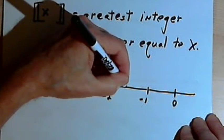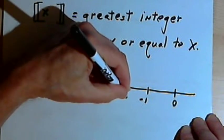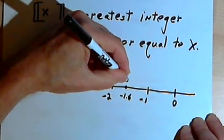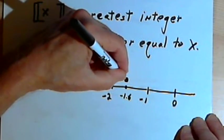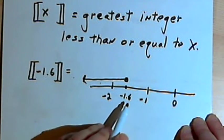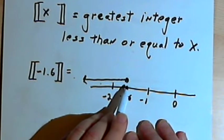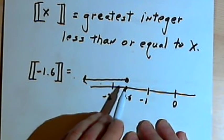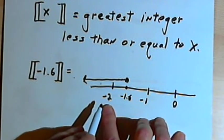So negative 1.6 will be between negative 1 and negative 2. And I'll draw an arrow to the left for all the numbers which are less than or equal to 1.6. The first integer I come to moving to the left is negative 2.